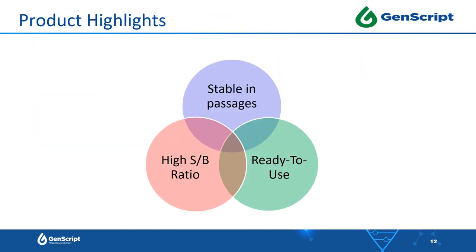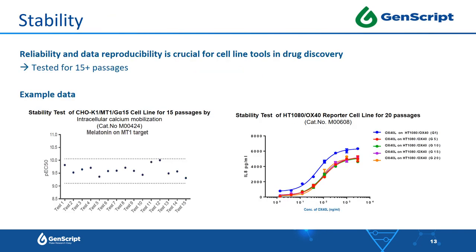Why should you choose stable cell lines from GenScript for your drug discovery project? Our stable cell line products are great cellular tools for drug discovery, advanced compared to other products by three key features: they are stable in passages, they provide a high signal versus background ratio, and they are ready to use. Regarding stability, when you use cell lines in your drug discovery project, data reproducibility is critical, and this can only be guaranteed by a highly stable cell line. Therefore, all of our stable cell lines are tested for stability for more than 15 passages.